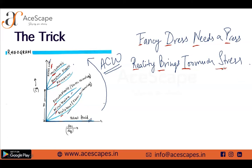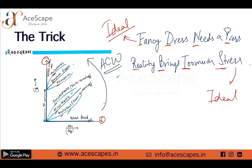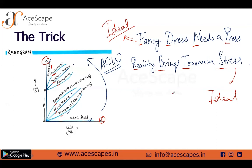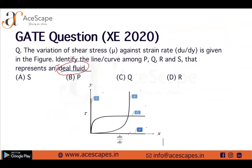Finally we end with solid — S for solid, S for stress. Just remember this one thing: whenever we're talking about the extreme points of our rheogram, which are the x-axis or the y-axis, it's always going to be ideal. The extremes are ideal, but whenever we talk about things in between, there are going to be differences. So, fancy dress needs a press, reality brings too much stress. Going back to our question, they are asking for ideal fluid. From our trick, we remember that ideal fluid comes on the x-axis — it's our first word, F for fancy, F for fluid — and from our anti-clockwise direction it lies on the x-axis.